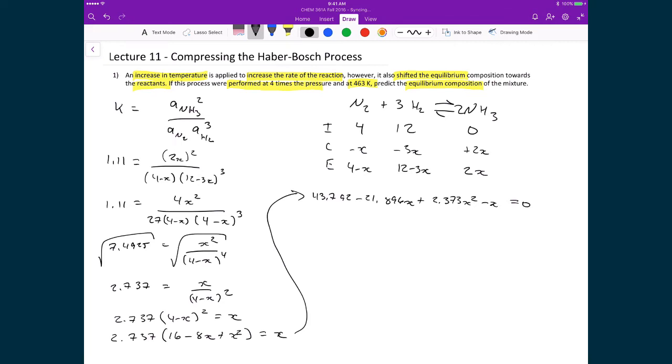Finally my expression here is going to ultimately be 2.737x squared minus 22.896x plus 43.792 and that's equal to 0. So I'm going to take this expression and then I'm going to plug in the respective values into the quadratic formula.